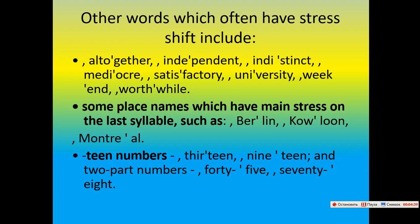Some place names which have main stress on the last syllable also show stress shift, such as: Berlin, Montreal. Teen numbers like 13 and 19, and two-part numbers like 25 and 78, also follow this pattern.